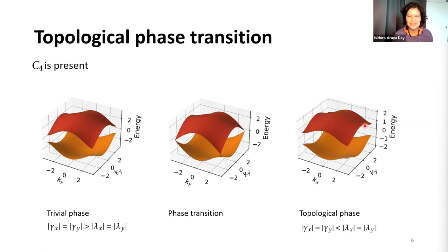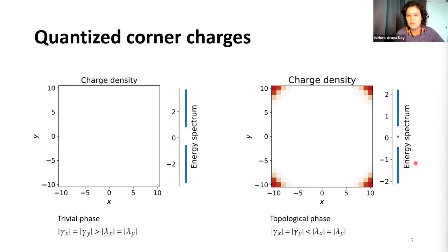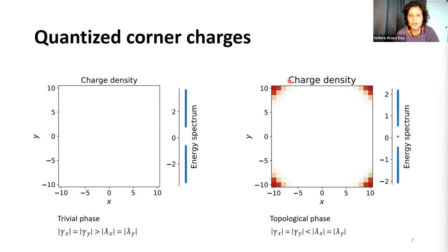When I started working on this project as a master's student, I would look at these plots and wonder how one is topological and the other trivial — both look the same. Later I learned that to tell the difference we need to look at open boundary conditions. These are lattices of 20x20 unit cells. In the trivial phase there is no mid-gap mode, no zero energy mode, and therefore no corner modes. In the topological phase we see four zero energy modes, and if we plot the eigenvectors associated to these zero eigenvalues as local charge density in the lattice, the charge is localized at the corners — and this charge is exactly quantized to one-half.